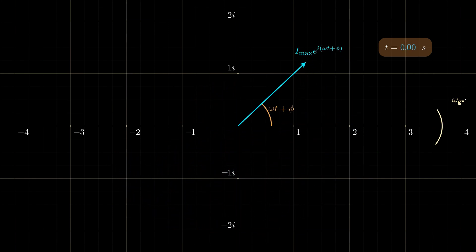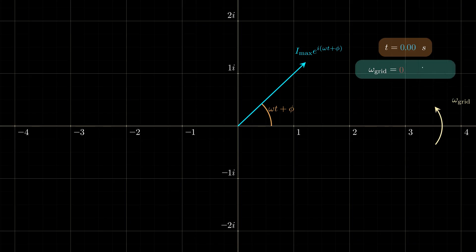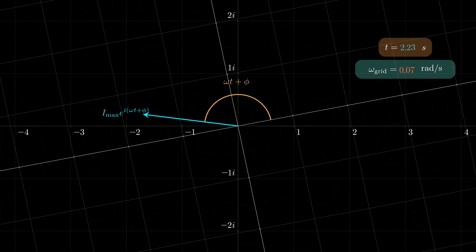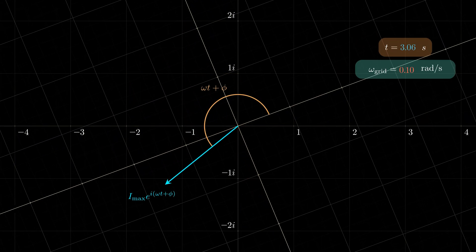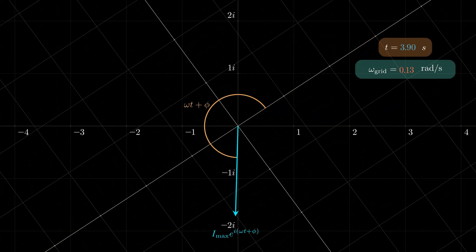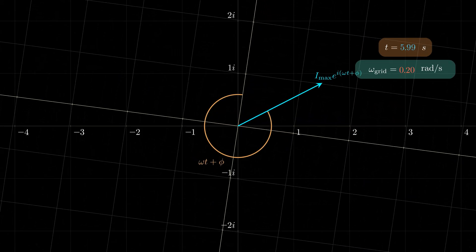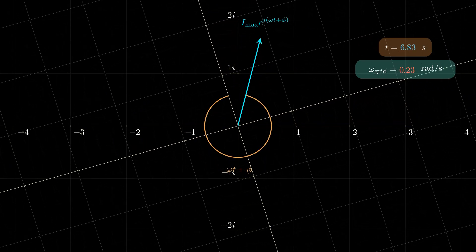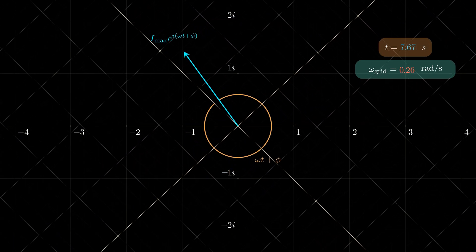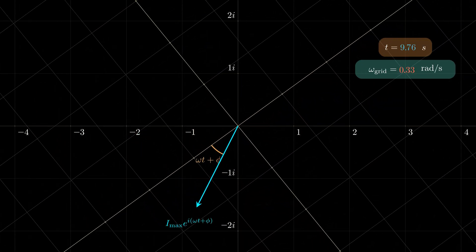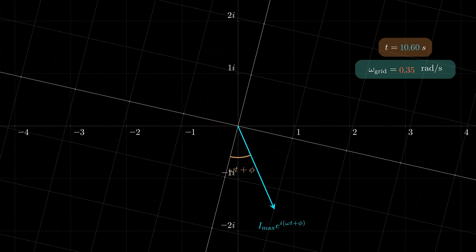Now here's the trick. What if we started rotating the whole grid in the same direction as the vector? Well, as the rotation speed of the grid rises, the vector will start to slow down with respect to the rotating grid, until we get to the speed of the vector, at which point the vector will appear completely still in the new reference system.